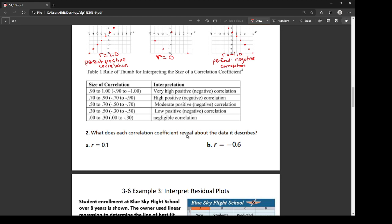So it says, what does each correlation coefficient tell us about the data it describes? So for an r value of 0.1, well, 0.1 is between 0 and 0.3. So we would say there's a negligible, that means you can ignore it, correlation, or no correlation. Now, if I have r equals negative 0.6, alright, 0.6 is between 0.5 and 0.7. So there is a moderate, okay, there's the strength. And then because it's negative, we're going to say it's a moderate negative, to talk about the direction, correlation.